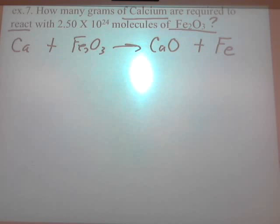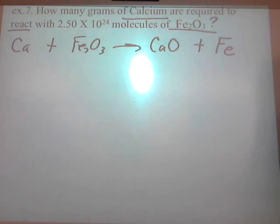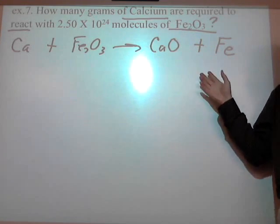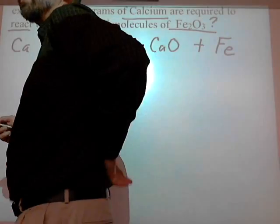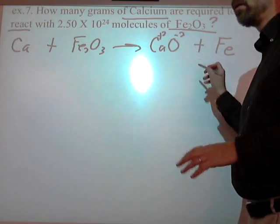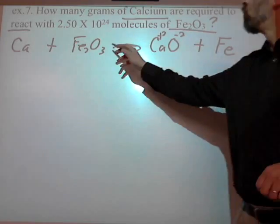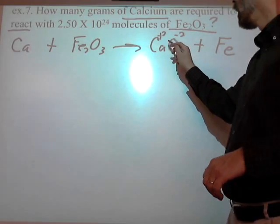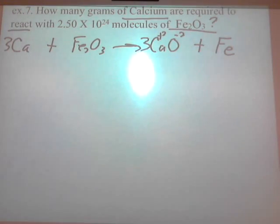That would have confused you if I hadn't been doing this example — and that's why we do homework and worksheets. I write the correct symbols: Ca reacts with Fe₂O₃ to form CaO plus Fe. Is calcium oxide written correctly? Plus 2 for Ca, minus 2 for O — he's okay. Is iron diatomic? No — he's okay. Is it balanced? Three oxygens, so I put a 3 in front of CaO — can't change the subscript. Then three calciums, so a 3 in front of Ca on the left. Two irons — so a 2 in front of Fe₂O₃. That's just step one.